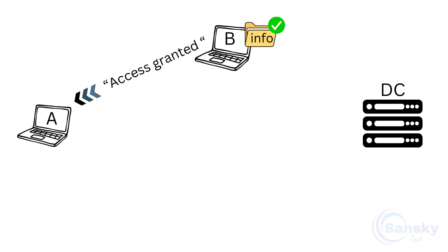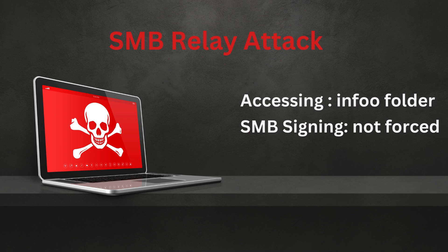Now that we have covered how the SMB protocol works, let's explore how an SMB relay attack unfolds when SMB signing is disabled. In this scenario, client A mistakenly types an extra O while searching for the shared folder info, leading to unintended consequences.